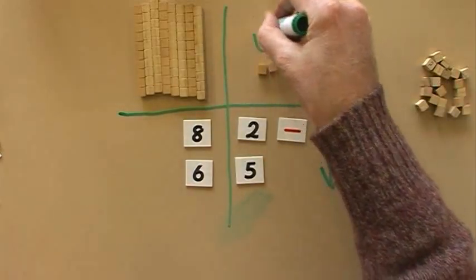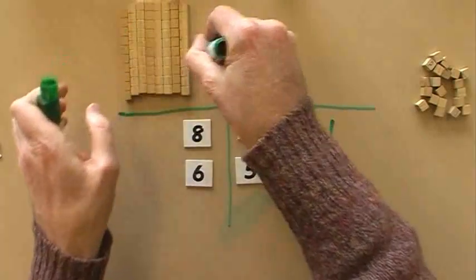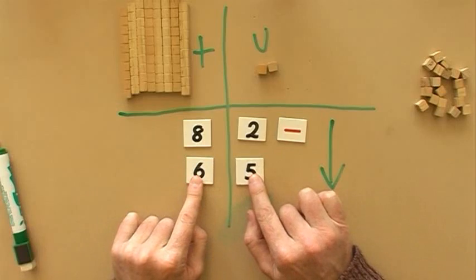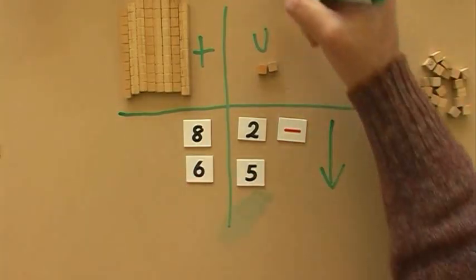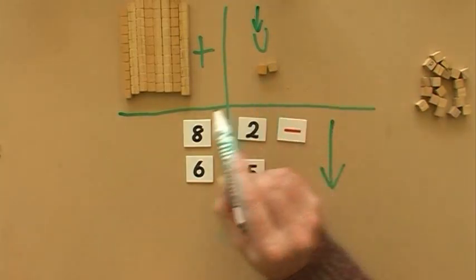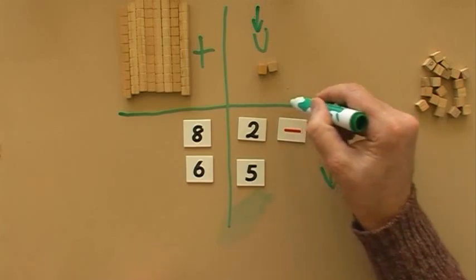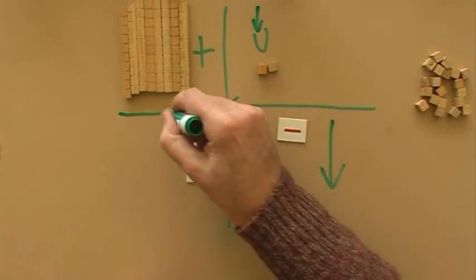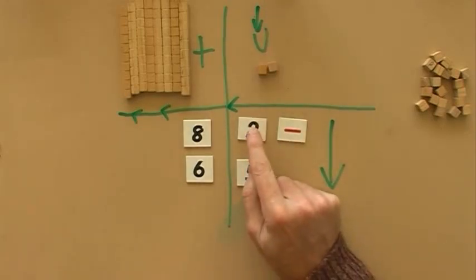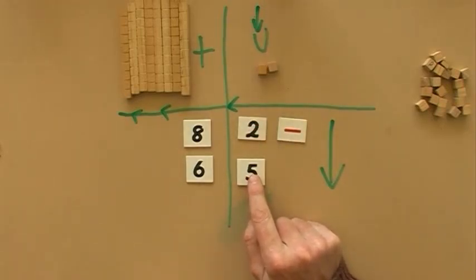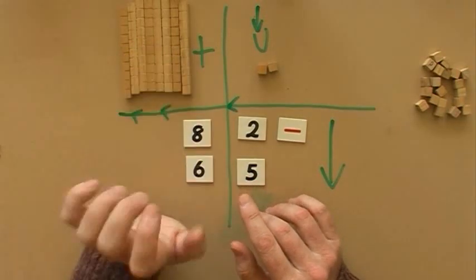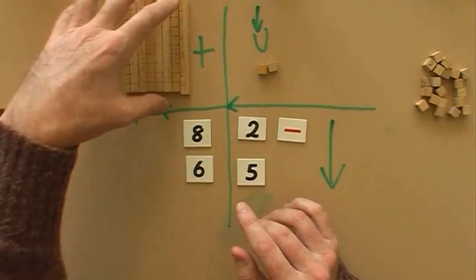I've got the units and here I've got the tens. 82 take away 65. I always start with the units column. I start with the units and then I work my way back along the place value chart. So first thing to do is starting with the units column: it's 2 take away 5. But I can't do that because 5 is too big, so I am going to borrow.